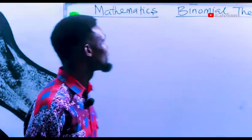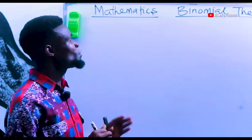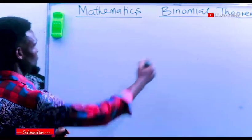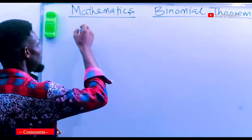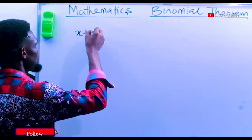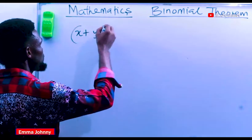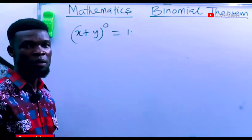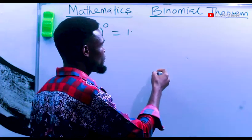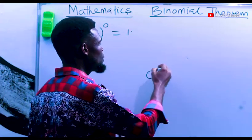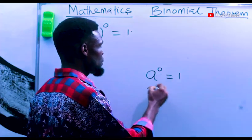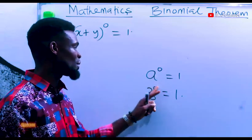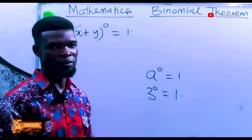Welcome back. Now we want to begin with binomial expansion. Let's say I have something like x plus y raised to power zero. Please note that the answer is one. Definitely, anytime you have something raised to power zero — a raised to power zero, the answer must be one. Three raised to power zero, the answer must be one. So anything at all raised to power zero is always one. That one is sure.